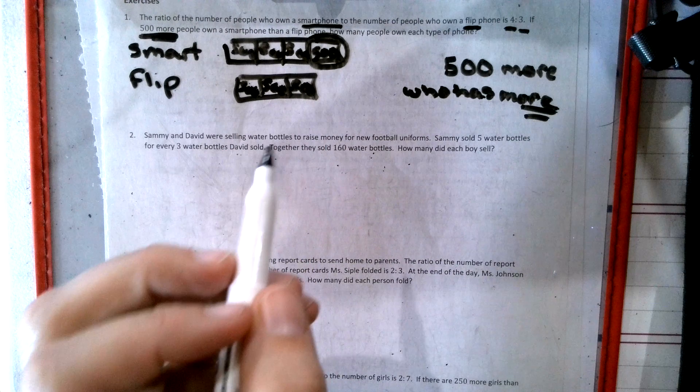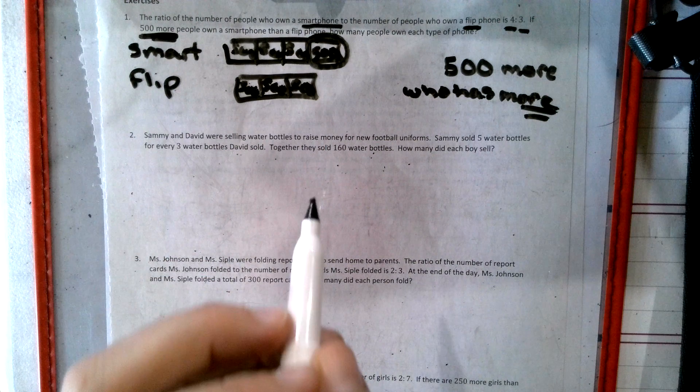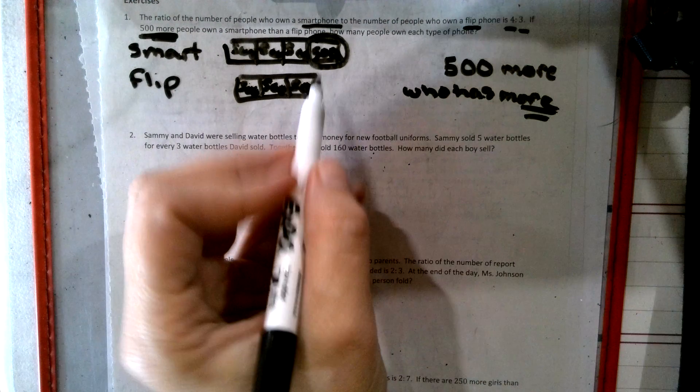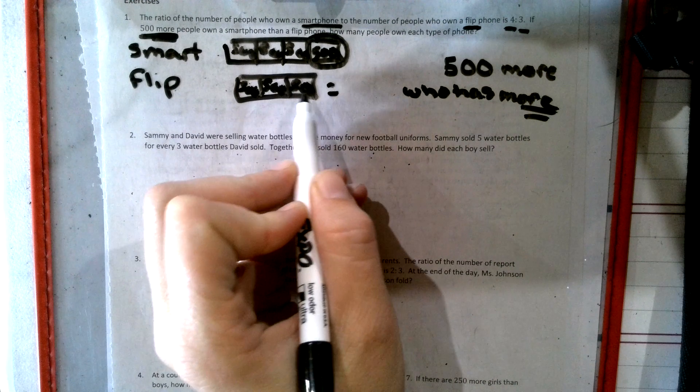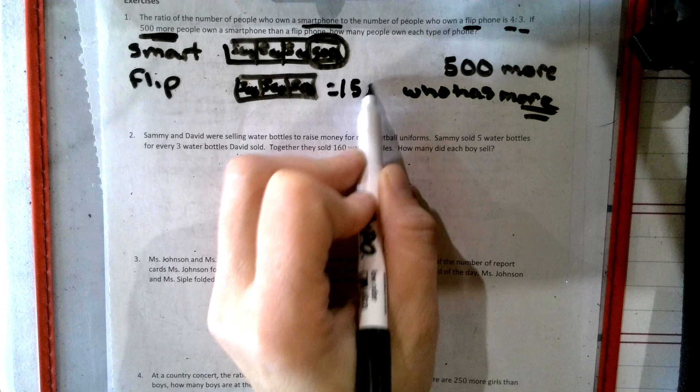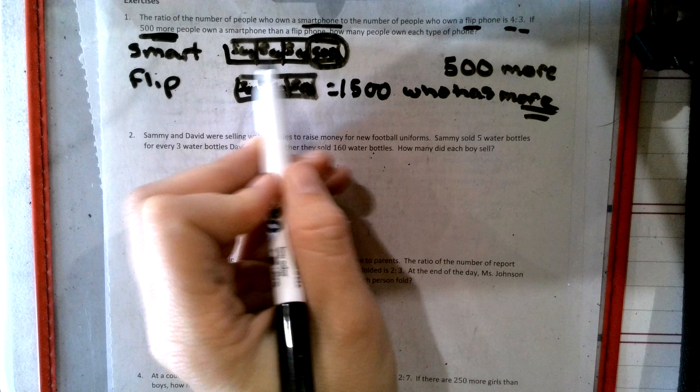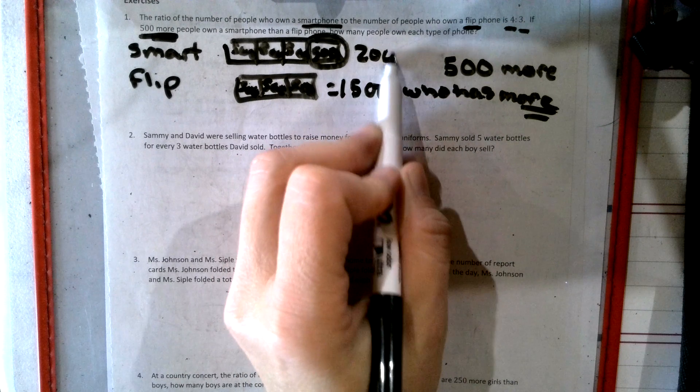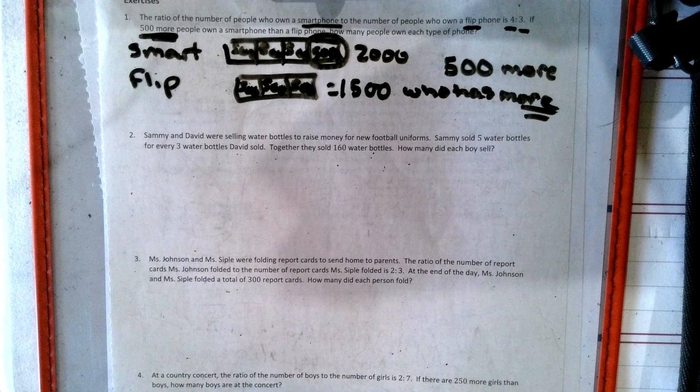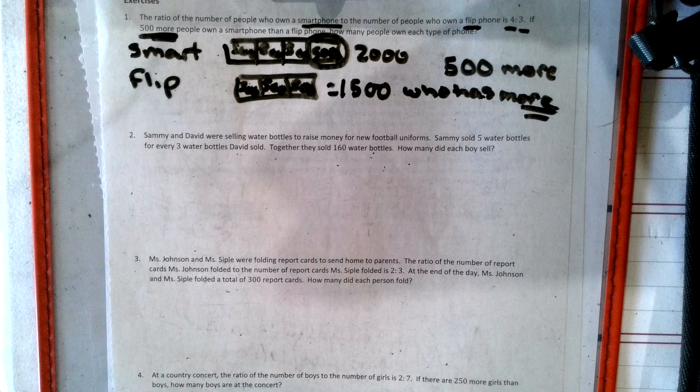So it says, how many people own each type of phone? Well, 500, 500, 500. So that's 1,500 on flip phones and 1,000, 2,000 on a smartphone. So that's the first tape diagram.